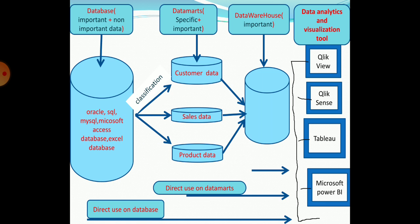Both are just like a database. The only difference is that data marts can store only important and specific data based on category, like sales data and customer data. Data warehouses can only store important data. We can also see data visualization tools, which are used to represent data in the form of charts, graphs and maps. At the bottom of the diagram, we see that data visualization tools can be used directly on a database, data marts and data warehouse.